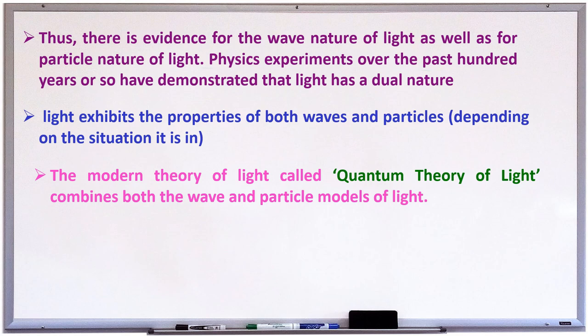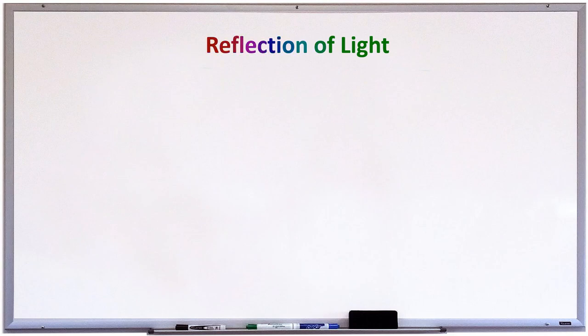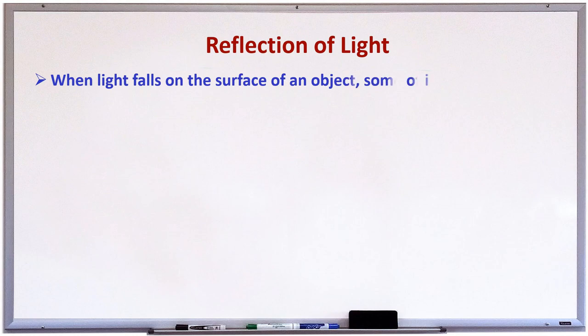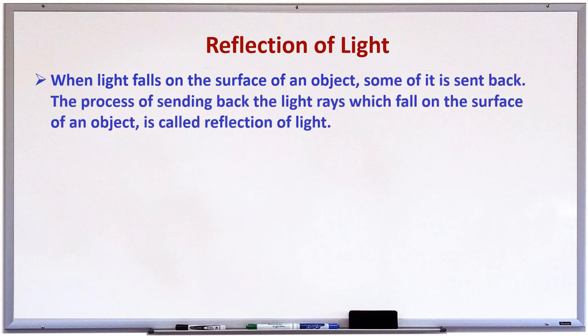Now, let us see what is reflection of light. When a light falls on a surface of an object, some of it is sent back. The process of sending back of light rays, which fall on the surface of the object, is called reflection of light.